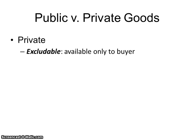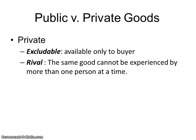Private goods, on the other hand, are just the opposite. They're excludable — only available to the buyer — and they are rival, meaning the same good cannot be experienced by more than one person at a time. So only one person can use these at a time, and it can only be the buyer.